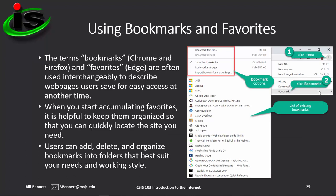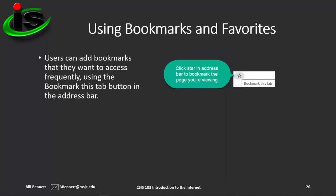Bookmarks — what Chrome and Firefox call them — and favorites — what Edge calls them — are used to describe web pages users save for easy access at another time. You can add, delete, and organize these bookmarks or favorites into folders that best suit your needs and work style. To create a bookmark, just click the star in the address bar, which lets you add the page you're currently viewing into the bookmarks or favorites grouping.